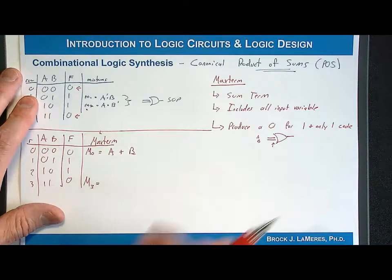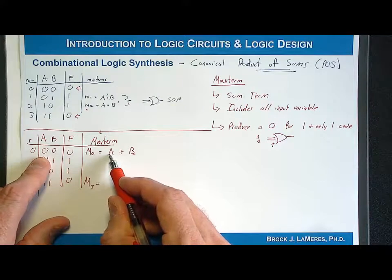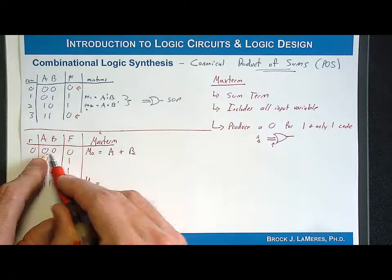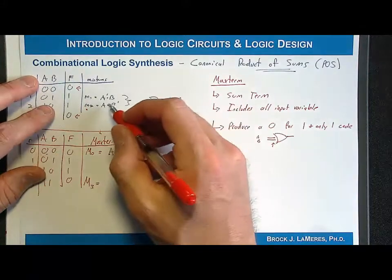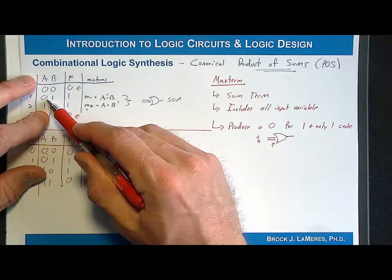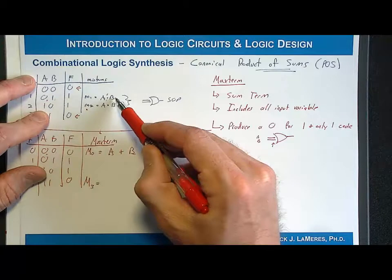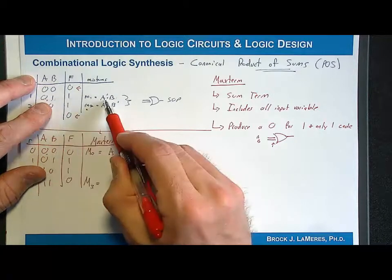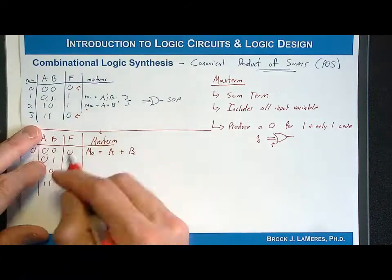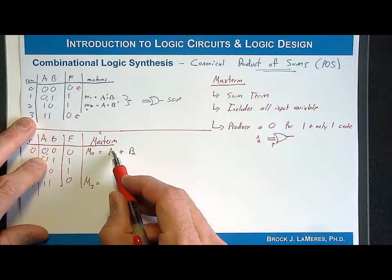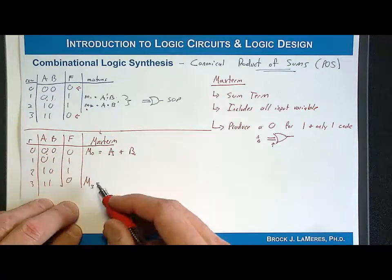Here's the easier way to think about it: whenever you see the input code is a zero, you leave that input variable uncomplemented. For this example, A was zero and B was zero, so both are uncomplemented. Compare this to min-terms: with a min-term, any input variable with a code of zero was complemented, and any input variable with a code of one was left uncomplemented. So for the min-term at row 1, the code was 01, giving A-not OR B. For max-terms, zeros in the input code mean the variable stays uncomplemented.